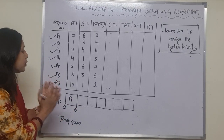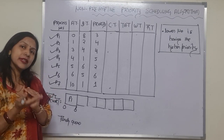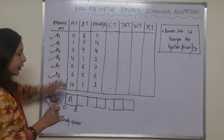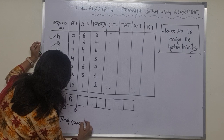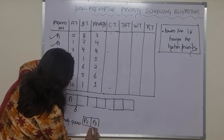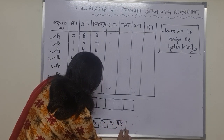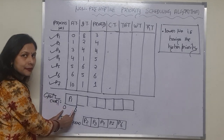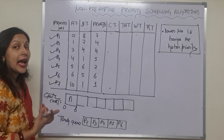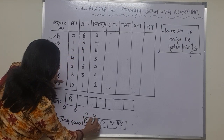Now we have to prepare the ready queue, because between 0 and 8 we have to check if any new processes have arrived. Yes, between 0 and 8, we have 5 processes. We write process numbers P2, P3, P4, P5, and P6 — these are waiting in the ready queue. We also write down their burst times and priorities.